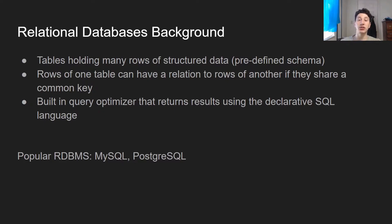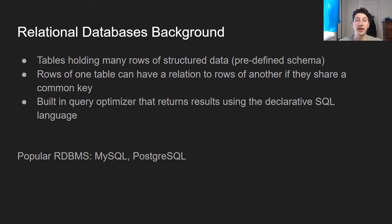Additionally, the whole point is that the rows of one table can have relationships with rows of another table if they share a common key — that key is generally known as a foreign key. Finally, there is a built-in query optimizer that returns results using the declarative SQL language. A declarative language means you type in the format of the result you want, basically saying select everything from this table and provide me with this type of information. The query optimizer then executes that the most efficient way possible using a combination of indexes, parallelism, and other things under the hood. In this way, relational databases are a little bit of a black box.